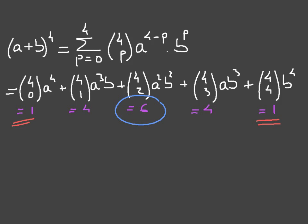The next thing to point out is that the second term and the term before last always have a binomial coefficient equal to the power to which we raised the parentheses — in this case 4. For example, if we had (a + b) to the power of 5, the second term and the term before last would have binomial coefficients equal to 5. So the first and last terms have coefficient 1, and the second and second-to-last have a coefficient equal to the exponent.